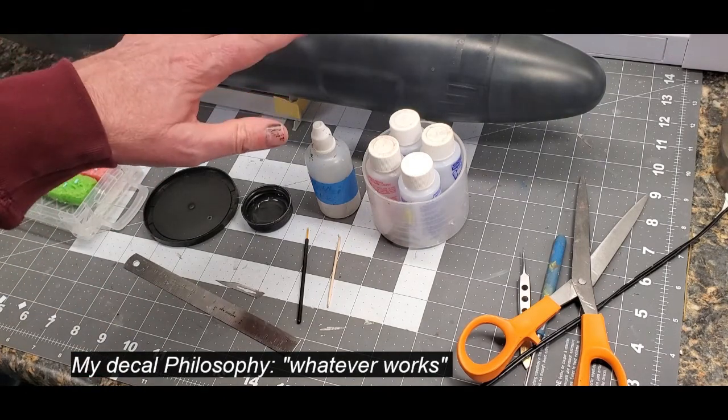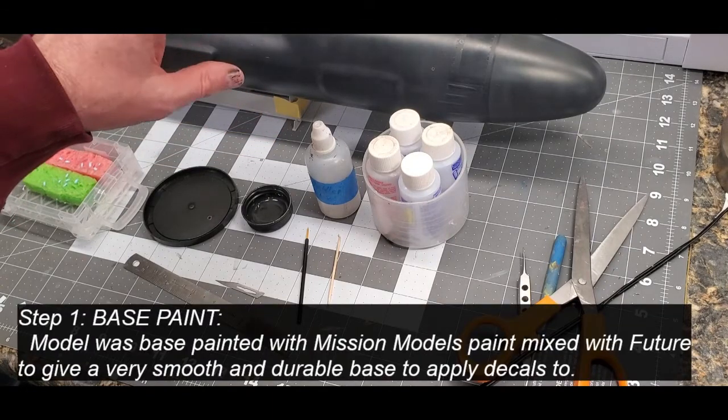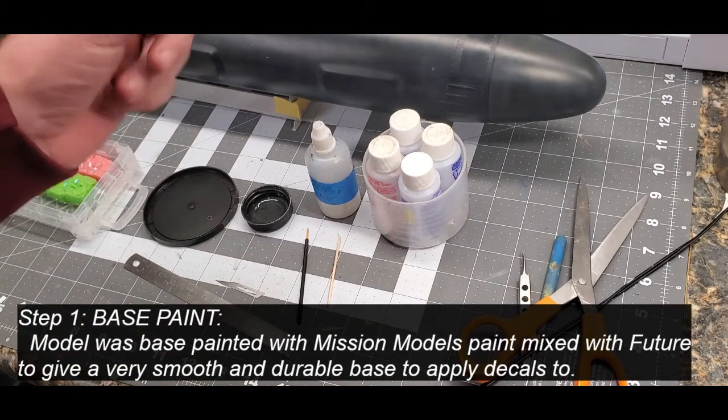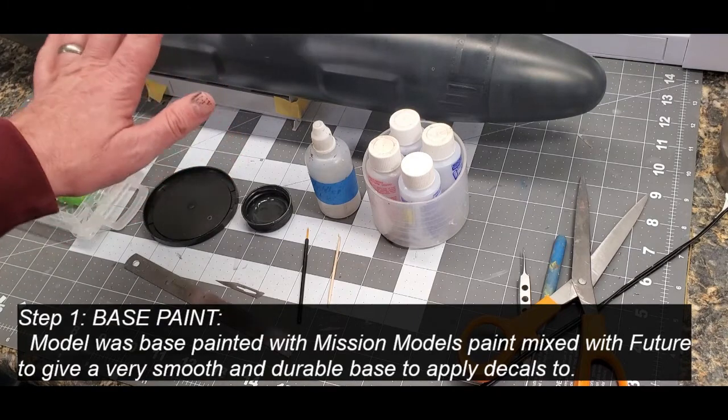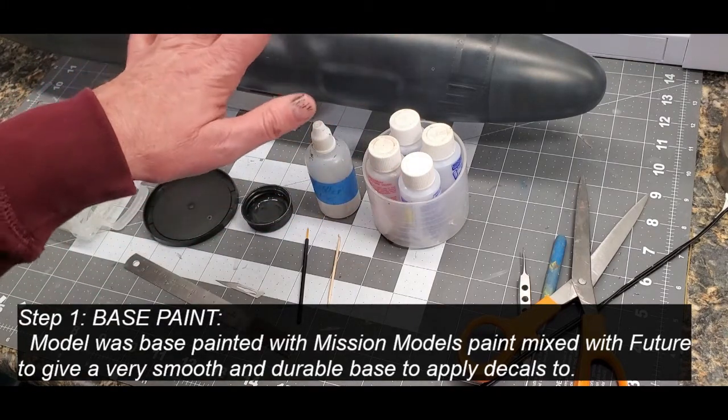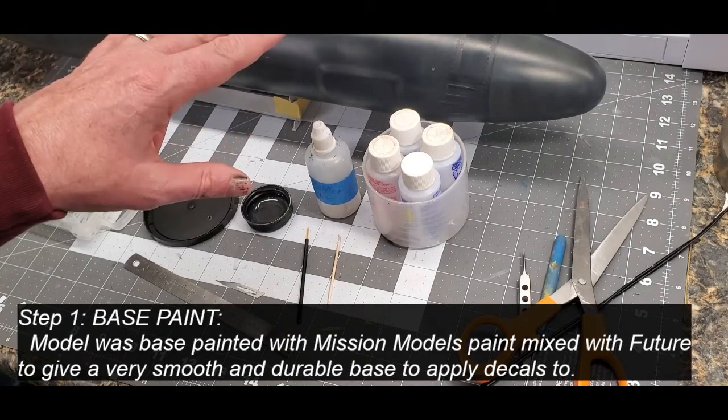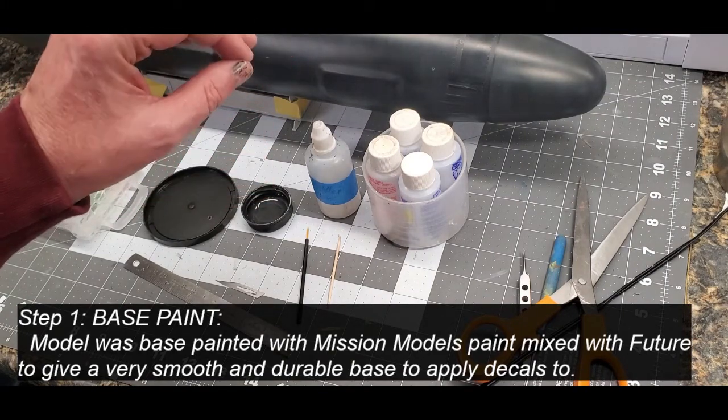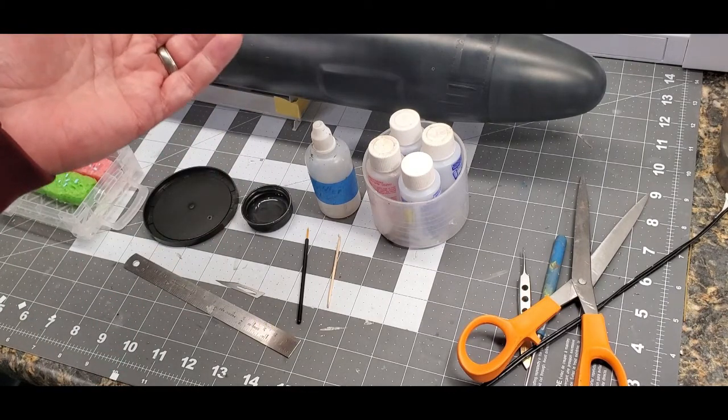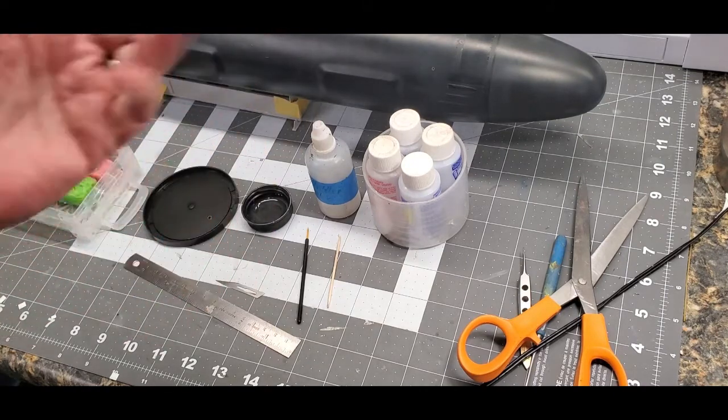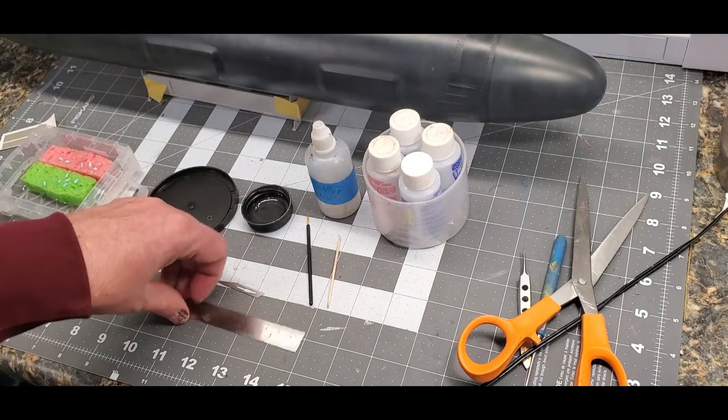I started this model by painting it with Mission Models paint that I had mixed a percentage of Future floor wax in. The effect that has on the paint is to make it very smooth. I will not be clear coating this model because basically I already did when I painted it. At least I clear coated it enough for me. These decals that I'm using, I'm not going to have any trouble with.